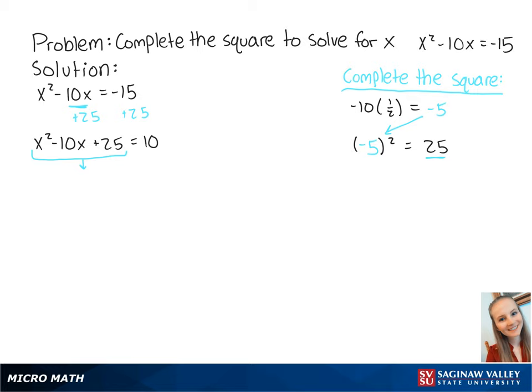Now we can complete the square to get x minus 5 squared equals 10.